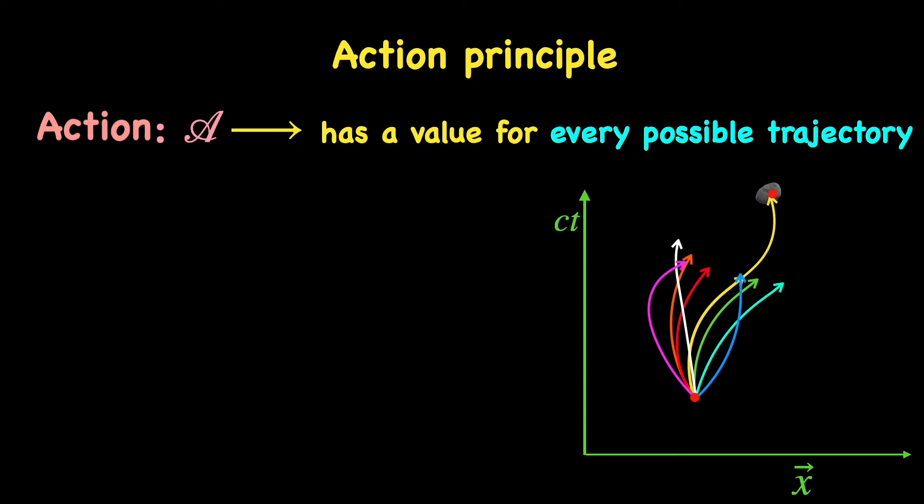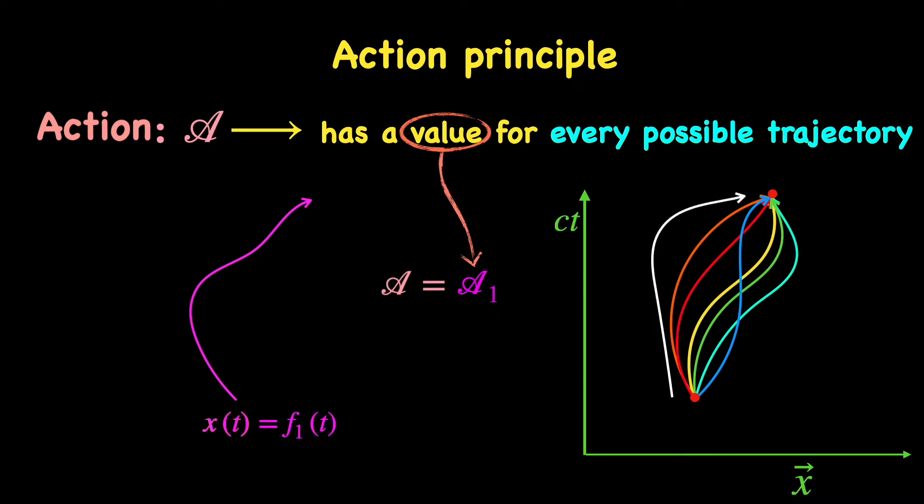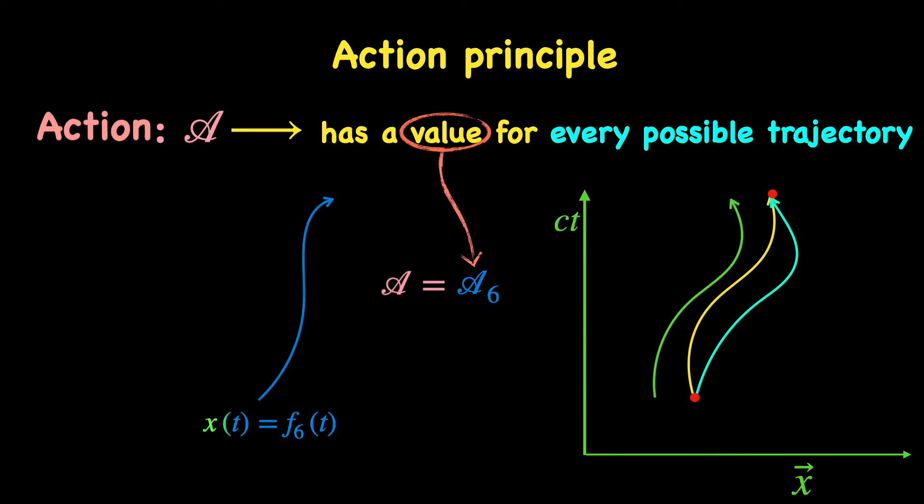We have already mentioned that a trajectory is mathematically represented by a function x(t). So different functions of time will signify different trajectories and thus each trajectory will correspond to a different value for the same given action. For example, you can see the action taking values a1, a2, a3 and so on for the paths corresponding to x1(t), x2(t), x3(t) and so on.